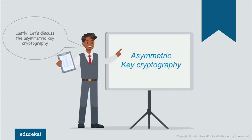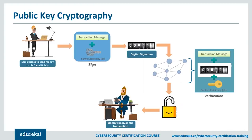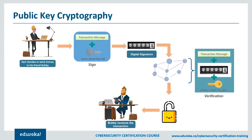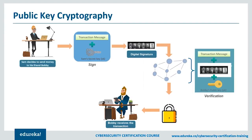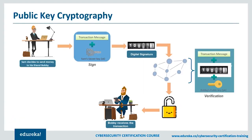Asymmetric cryptography, also known as public key cryptography, is any cryptographic system that uses a pair of keys: a public key which may be disseminated widely, and a private key known only to the owner. This accomplishes two functions: authentication, where the public key verifies that a holder of the paired private key sent the message, and encryption, where only the paired private key holder can decrypt the message encrypted with the public key. Any person can encrypt a message using the receiver's public key, but that encrypted message can only be decrypted with the receiver's private key. Effective security only requires keeping the private key private — the public key can be openly distributed without compromising security.